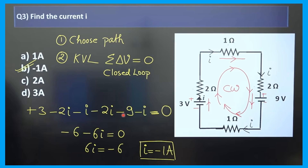Simplifying: 3 minus 9 equals minus 6. The I terms: minus 2I minus I minus 2I minus I equals minus 6I. So minus 6 minus 6I equals zero, giving 6I equals minus 6. Therefore I equals minus 1 ampere. This is the current value.